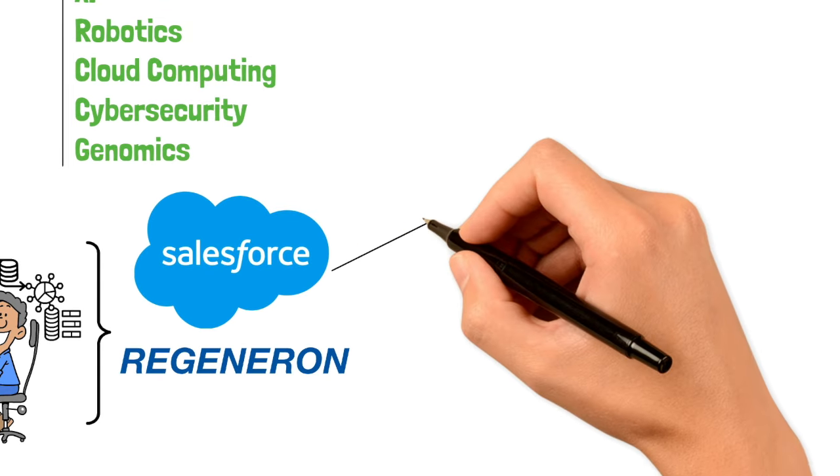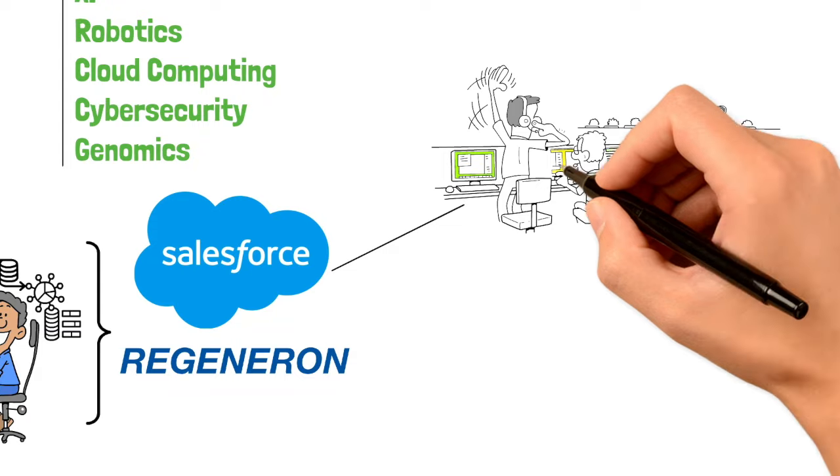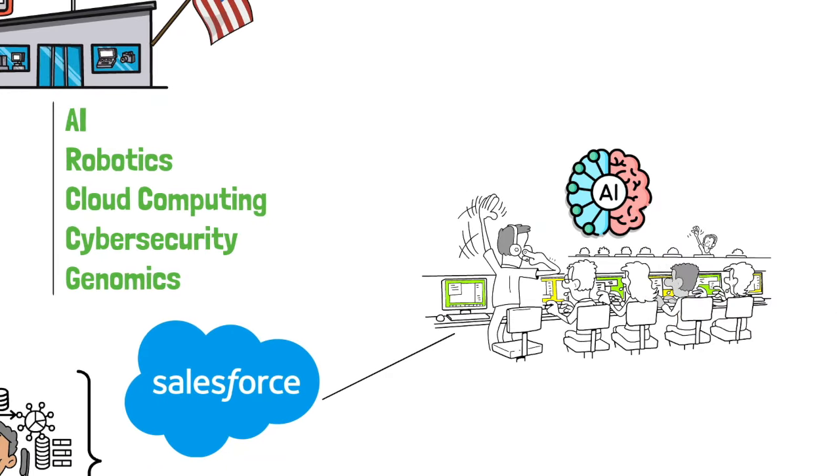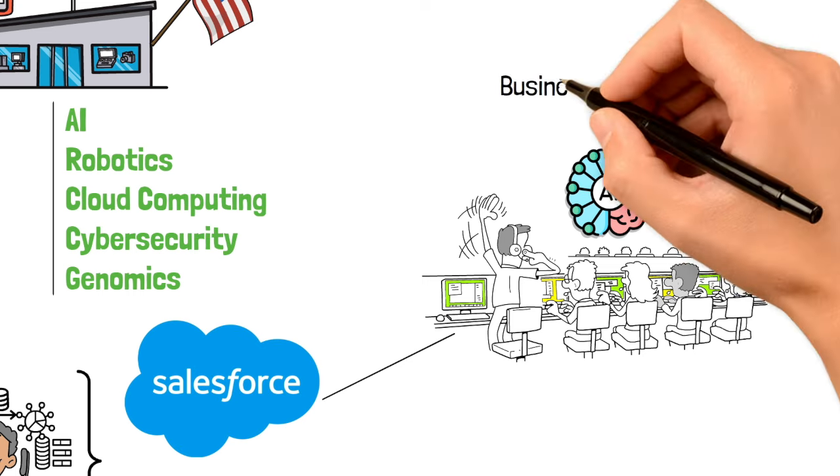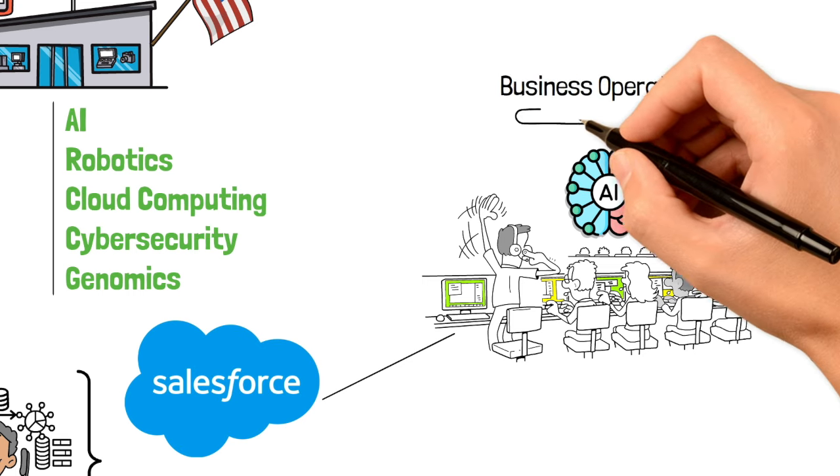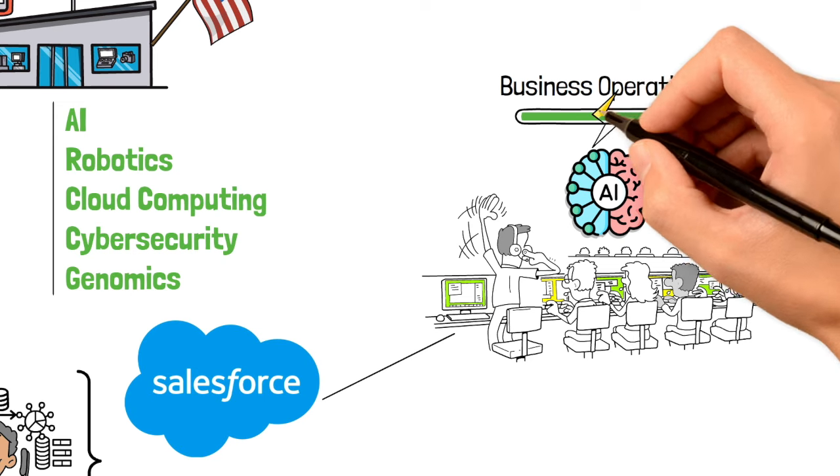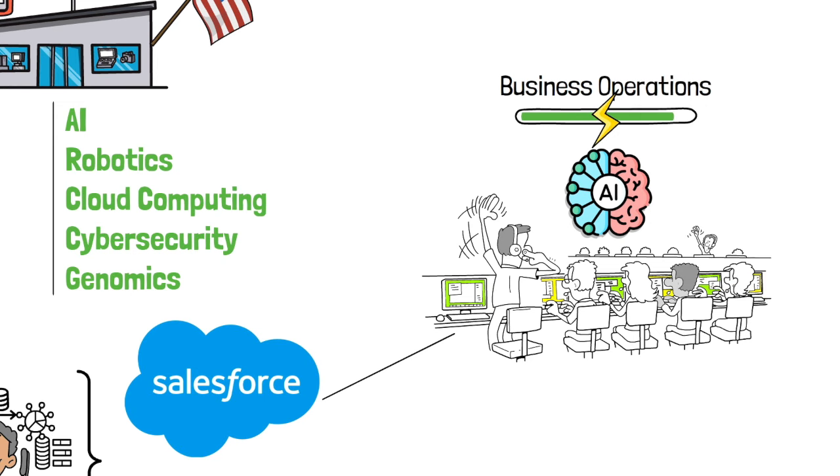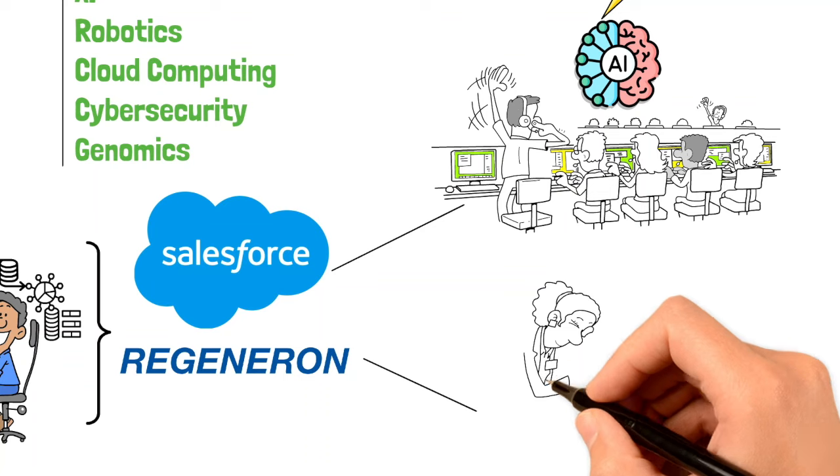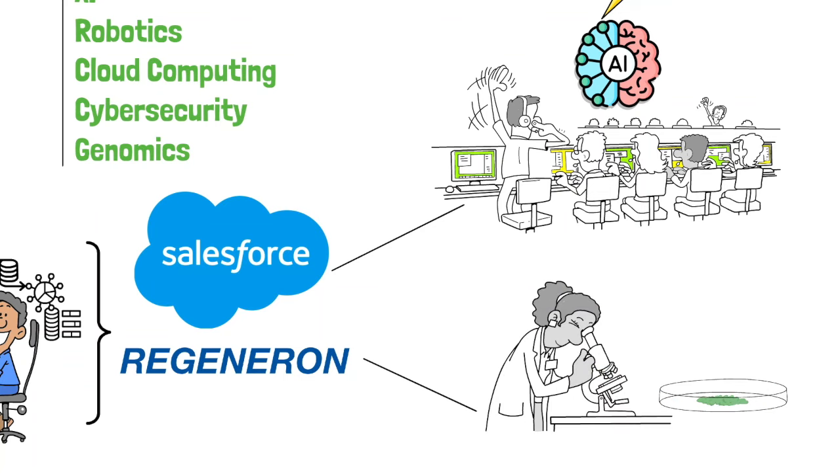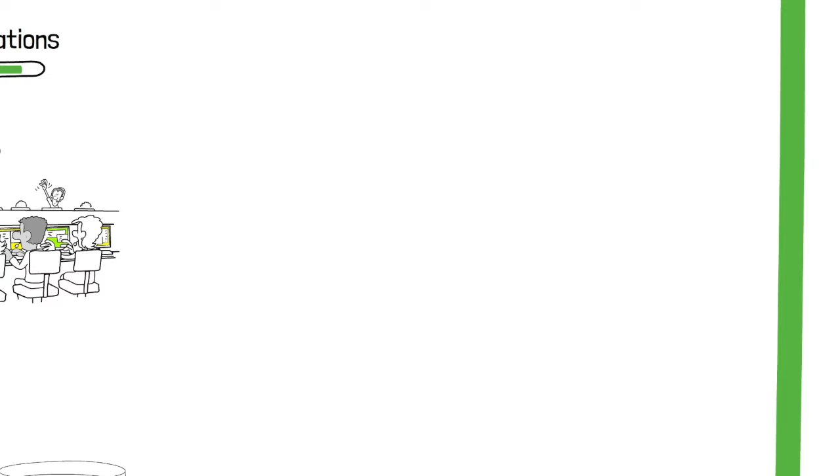Salesforce, one of the top holdings, specializes in Customer Relationship Management or CRM software and has integrated AI solutions under the name Salesforce Einstein. This integration is critical as AI becomes more prevalent in business operations. Another notable holding, Regeneron Pharmaceuticals, leverages AI for drug discovery and development, accelerating the process of bringing new therapies to market.